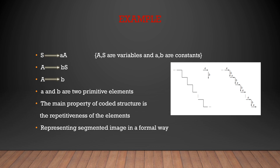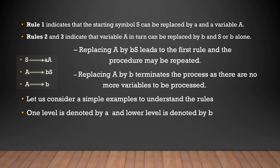We define two primitive elements for two levels of the staircase and make the code as shown in the figure. The most obvious property of the coded structure is the repeativeness of a, b. Rule 1: starting symbol S can be replaced by a and variable A. Rules 2 and 3 indicate the variable A in turn can be replaced by b and S, or alone b. Replacing A by bS leads to the first rule and the procedure may be repeated. Replacing A by b terminates the process as there are no more variables to be processed.